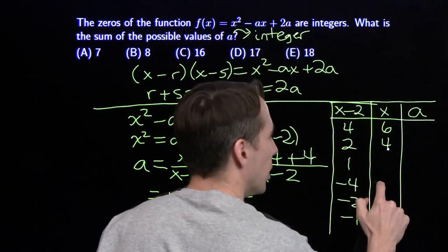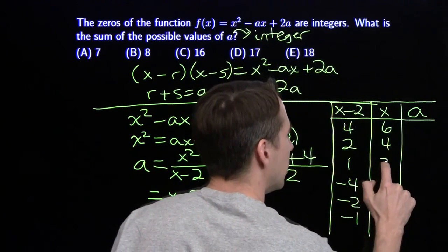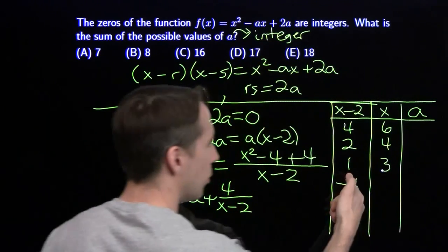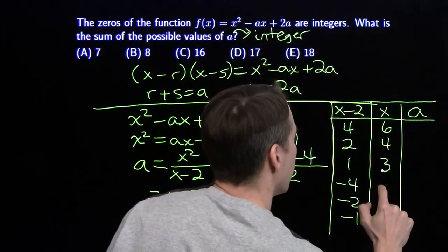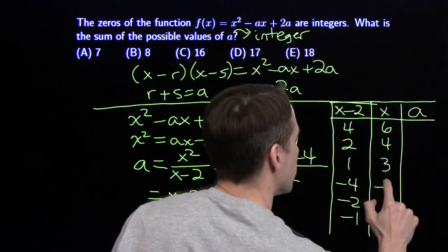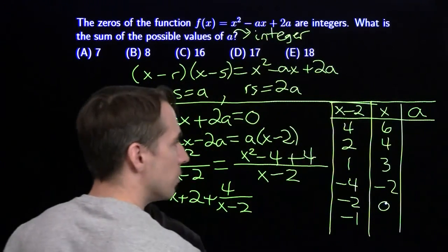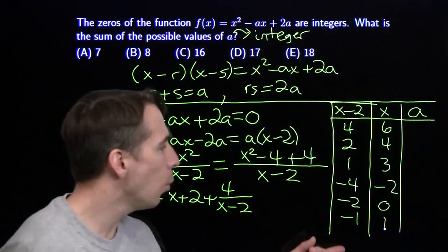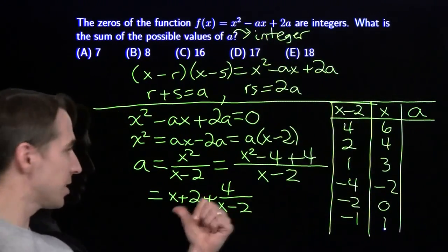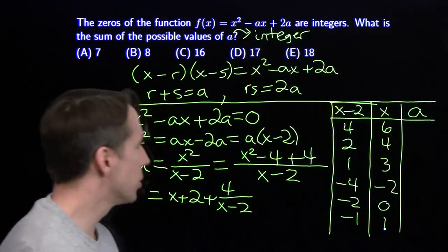Getting x values for each case: x = 6, 4, 3 for the positive factors. For the negative factors: -2 - 2 = -4, so x = -2. Then x = 0, and x = 1. Now I can stick these into the equation to get values of a.